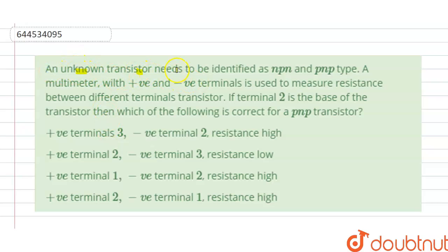An unknown transistor needs to be identified as NPN and PNP type. A multimeter with positive and negative terminals is used to measure the resistance between different terminals of the transistor. If terminal 2 is the base of the transistor, then which of the following is correct for a PNP transistor? So we have four options given here and we have to find the correct option.